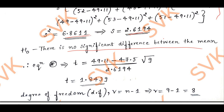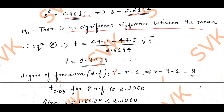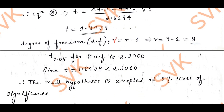For the degree of freedom in T distribution, ν = n − 1. Since the sample size n = 9, the degree of freedom is 9 − 1 = 8. At 5 percent level of significance with 8 degrees of freedom, the table value is 2.306.